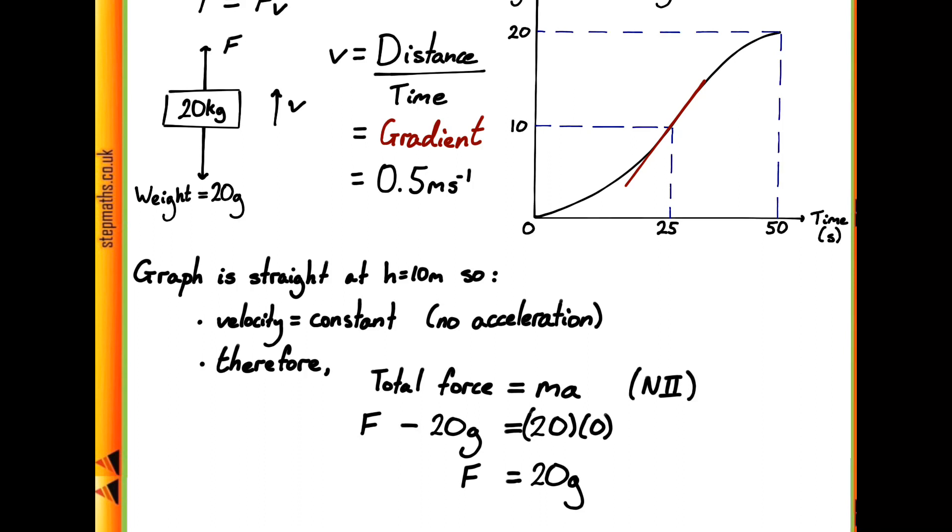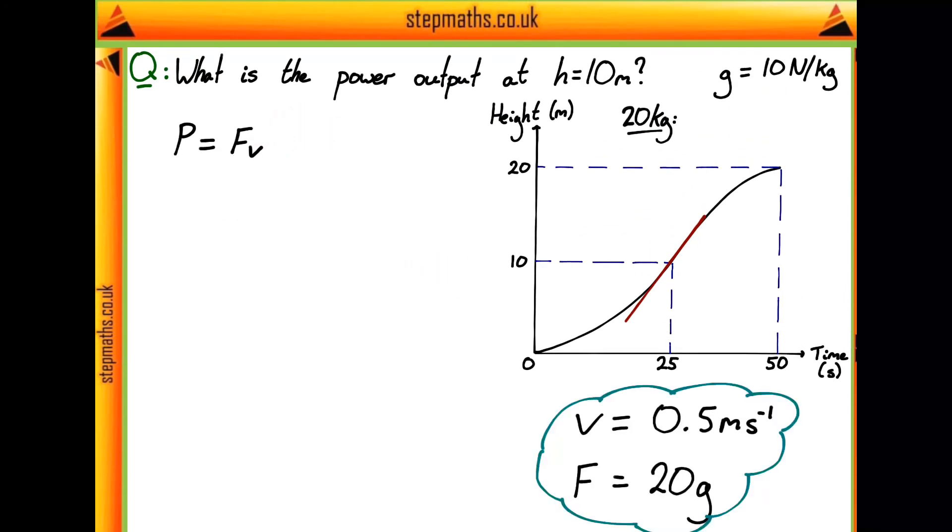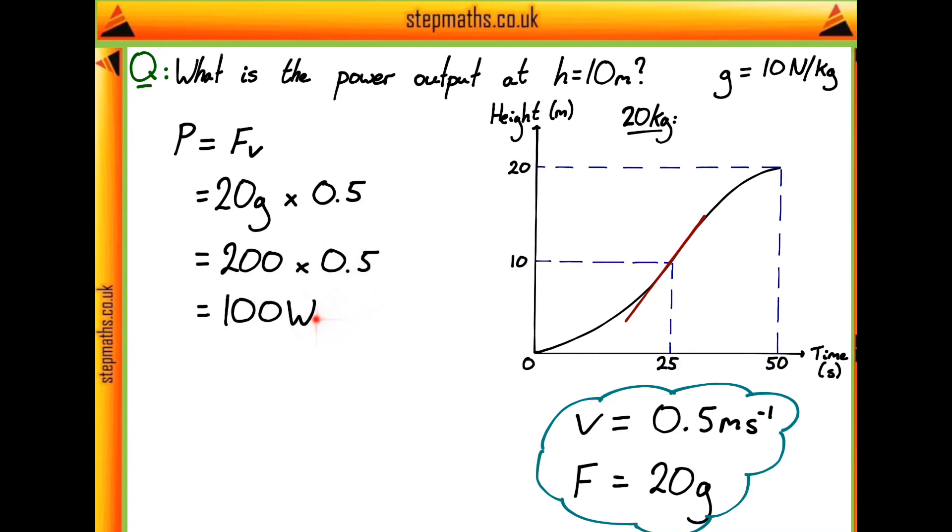Now that we have the velocity of 0.5 meters per second and a force of 20g, we can substitute these into our equation for power to find our final answer. Moving on to a new page, multiplying 20g by 0.5 meters per second, taking g to be 10, gives us 200 times 0.5, which is 100 watts. This is our final answer and corresponds to answer D given in the question.